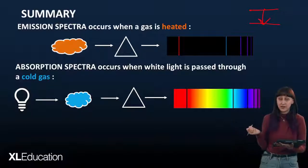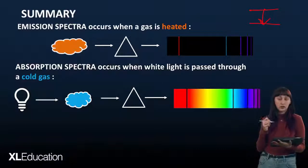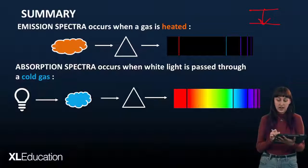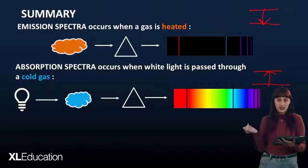Absorption spectra occurs when white light passes through a cold gas and it absorbs photons. And these transitions are from the lower energy levels to the higher energy levels. And that's emission and absorption spectra. And I really hope that helped you understand a little bit more about light.